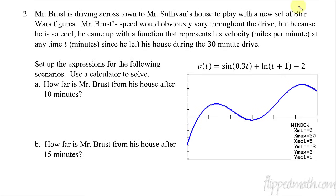For this problem, we have Mr. Brust. He's going to drive over to Mr. Sullivan's house across town. He's going to take 30 minutes to get there. He comes up with a graph that shows his velocity. So this is his velocity. It's kind of weird because he has negative velocity, then positive velocity, then negative velocity, and then positive velocity. If it's negative velocity, he's going the wrong way — not going correctly to Mr. Sullivan's house. Then he figures that out, turns around, and now has positive velocity going the right direction. Then he gets lost, goes back towards his house with negative velocity, and then positive velocity again all the way until he gets to Mr. Sullivan's house. We're going to say at 30 minutes he's there.